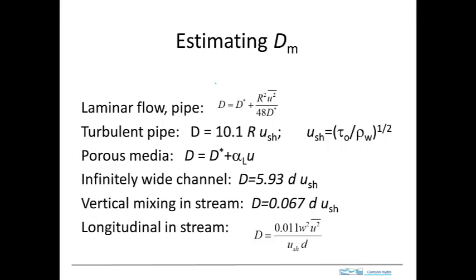There are a variety of ways of estimating the mechanical dispersion term in turbulent flows, and I'm summarizing a couple here. For laminar flow in a pipe, we have the molecular diffusion and the mechanical dispersion term. The molecular diffusion appears in the denominator because in laminar flow, when two particles start next to one another and become separated due to the velocity gradient, they tend to diffuse back together — so molecular diffusion limits dispersion. That's why D appears in the denominator.